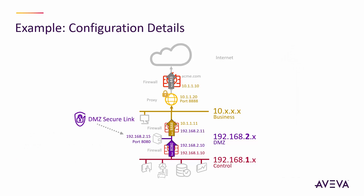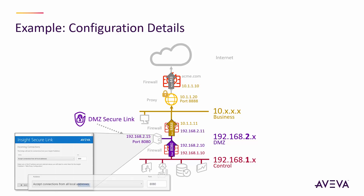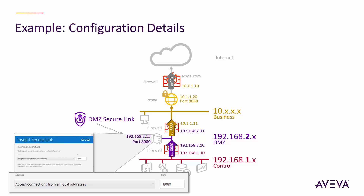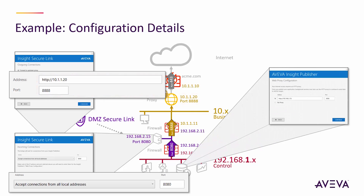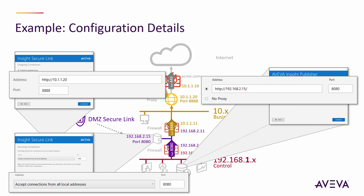Let's look at how you would configure this. Once you install DMZ Secure Link, you can configure which IP addresses it listens on and the port it uses. If there's an upstream corporate proxy, you can configure that as the forward proxy it will use to get to the internet — specify your corporate proxy in the DMZ Secure Link configuration. Then on the publishing side, in the publisher, you can also specify a proxy, referencing the DMZ Secure Link.